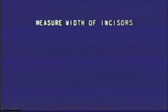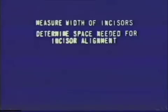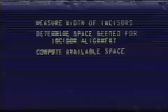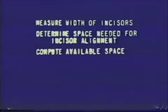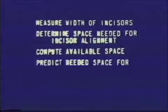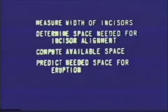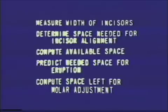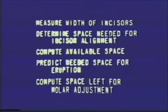Briefly, the analysis involves measuring the width of the lower incisors at their mesial diameter, determining the width of the space needed for incisor alignment in each quadrant, computing the available space by measuring the width inside the child's mouth, predicting the needed space for eruption by going to the eruption prediction chart, and computing the space left for molar adjustment or the amount of crowding or spacing in each quadrant.